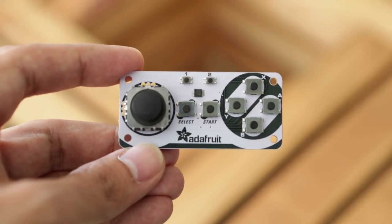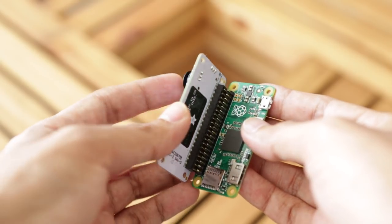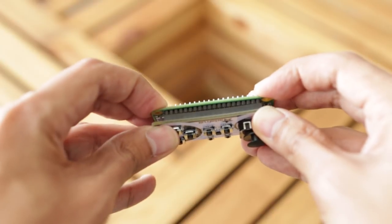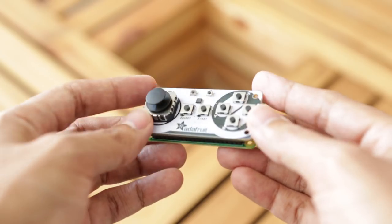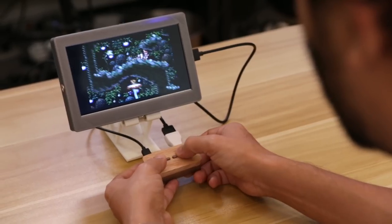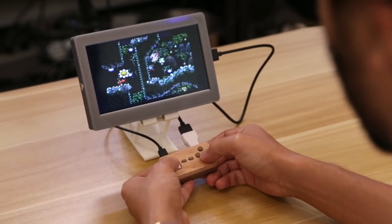This is the Joybonnet from Adafruit. It's designed to fit on top of a Raspberry Pi Zero so you can make some really cool RetroPie projects. This week we designed a case to make a classic looking game controller.